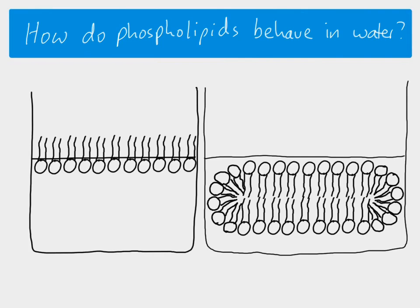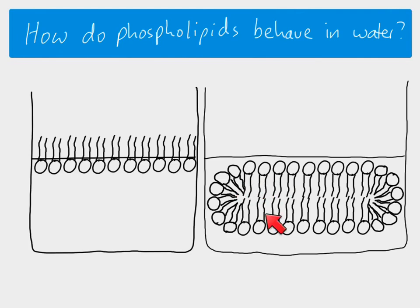What you've got is an arrangement where all of the heads of the phospholipid molecules are in contact with the water, and all of the tails — which don't like water — are in the middle, not in contact with water at all. It's like a little compartment where the heads are making sure the tails are not in contact with the water. This is a phospholipid bilayer. 'Bi' means two — here's one layer and here is the other. They've arranged themselves automatically because the heads are hydrophilic and the tails are hydrophobic.